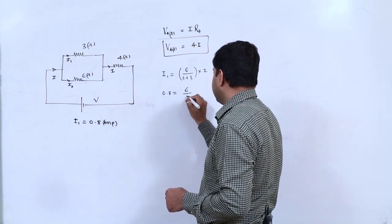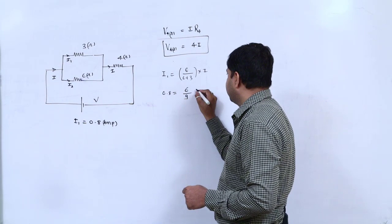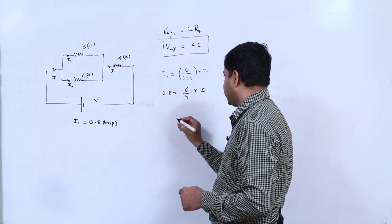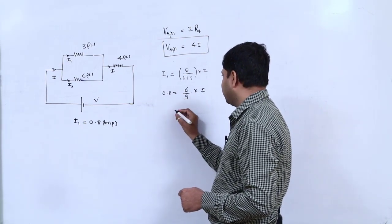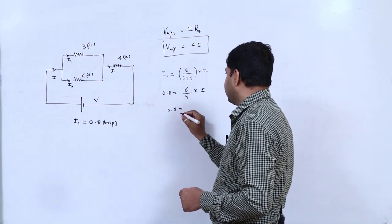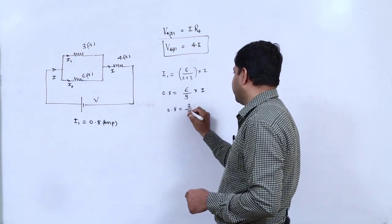The incoming current is 0.8, right? 6 divided by 9, multiply by i. You can see that altogether 0.8, that is 2 divided by 3.